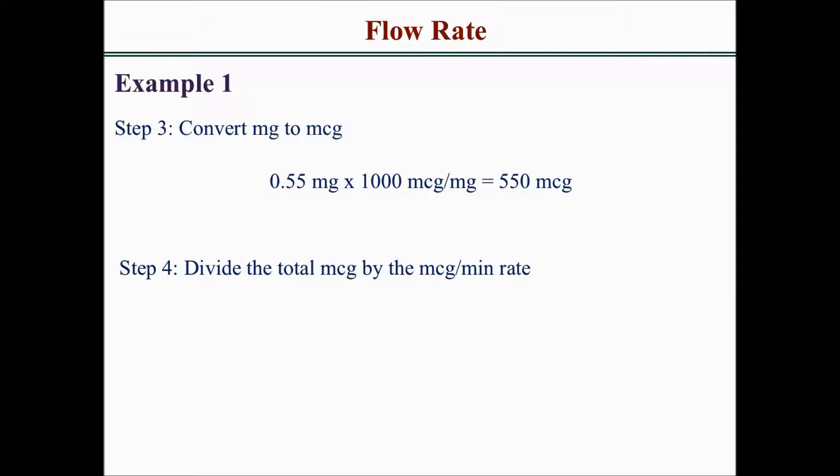Then you divide the total micrograms by the micrograms per minute rate. The patient received 550 micrograms total and they're receiving 127.27 micrograms per minute. So it will take 4.3 minutes for the patient to receive the 550 micrograms.